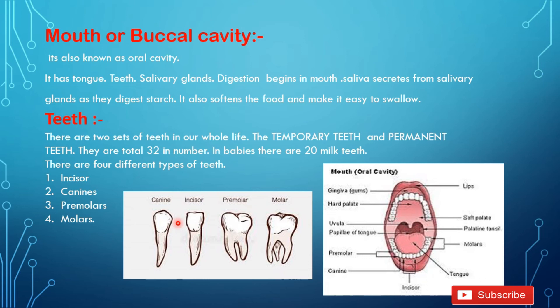They are named on the basis of their function and structure. The first type is incisors — used for biting and cutting. Canines are pointed teeth used for tearing meat or flesh. Premolars and molars are broad, flattened teeth which are used for grinding the food.